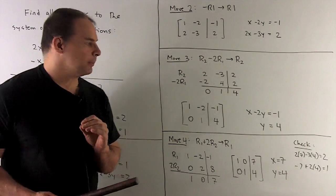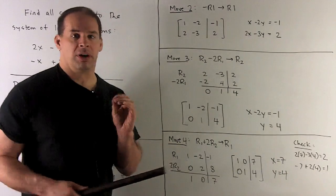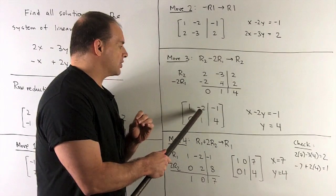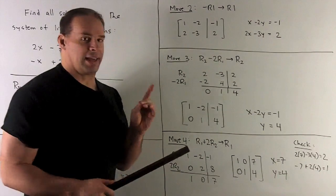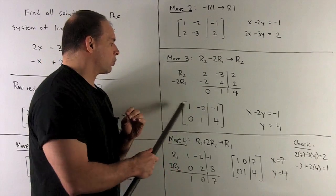Next step. You'll notice we got the 0 here. We get this 1 for free with our previous row operation. So all I have left is turn that minus 2 into a 0. Again, the same idea. We're going to add twice row 2 to row 1.